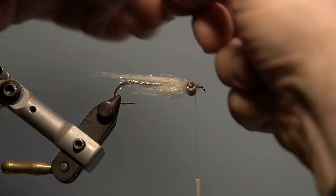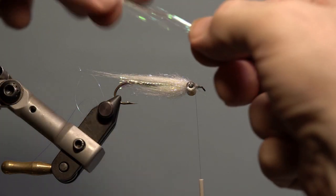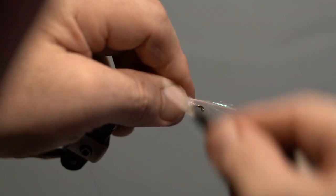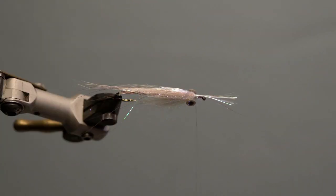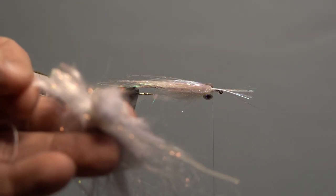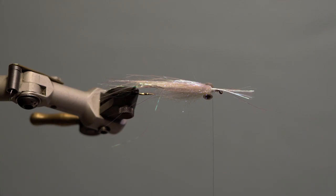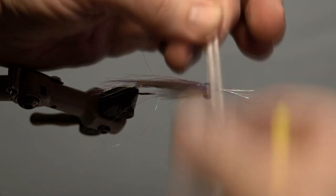Next, tie in the fine strands of pearl flash slightly past the top wing. Next, tie in the white synthetic fibers with flash over the pearl flash.